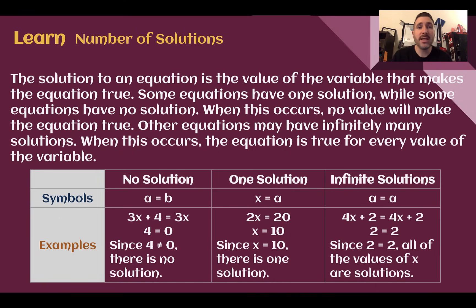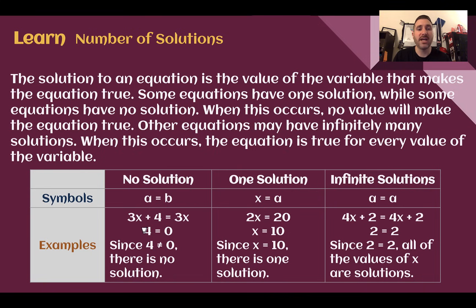Let's look at our table of our three types of solutions. First, we have no solution. If we look at our example, we can see 3x plus 4 equals 3x. If we try to solve for the variable by subtracting 3x from both sides, we would still have 4 on the left side, but 3x minus 3x would be 0.